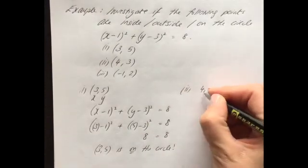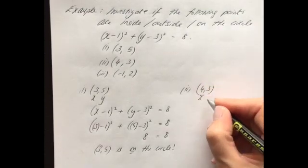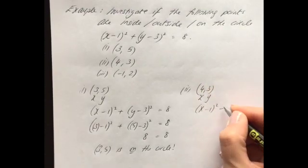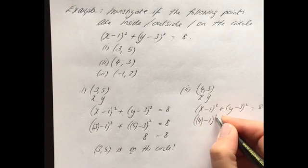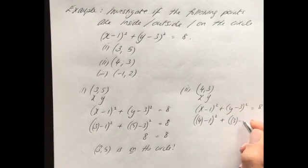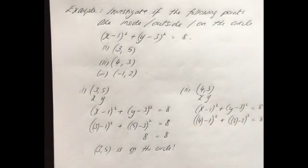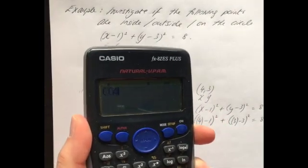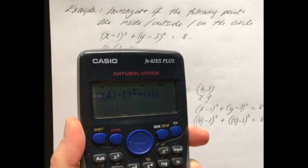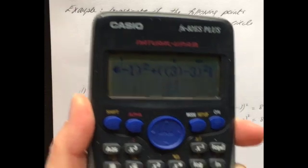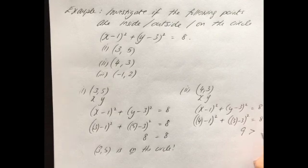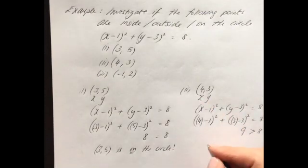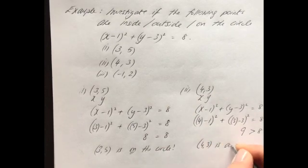Now let's investigate the point (4, 3). That's x = 4 and y = 3. Substituting in: (4 - 1)² + (3 - 3)². Typing the left hand side into the calculator gives 9. Since 9 is greater than 8, this implies that the point (4, 3) is outside the circle.